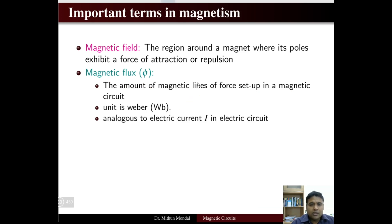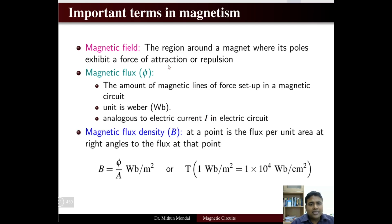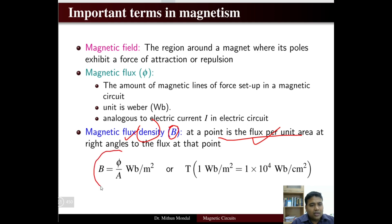The unit of flux is Weber, and it is analogous to electric current in a circuit — what current does for an electric circuit, flux does for a magnetic circuit. Magnetic flux density, denoted by B, is the flux per unit area at a point. Since it is a density, it equals flux per unit area, so B = phi / A, with the unit Weber per meter square.